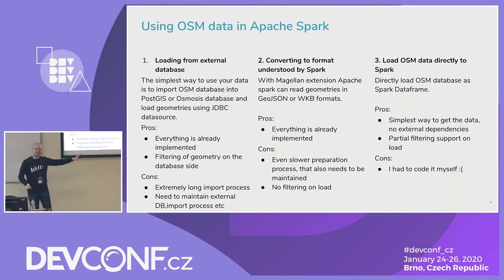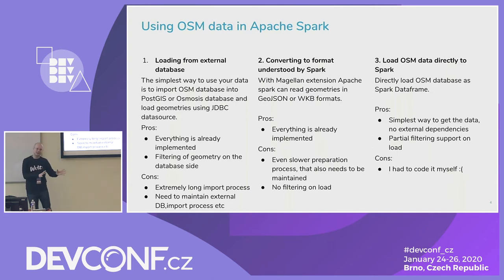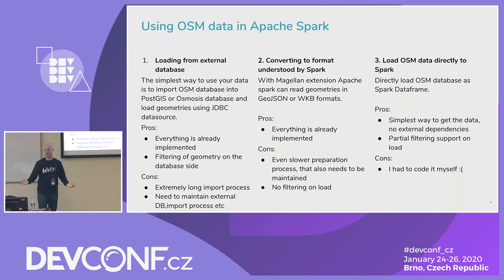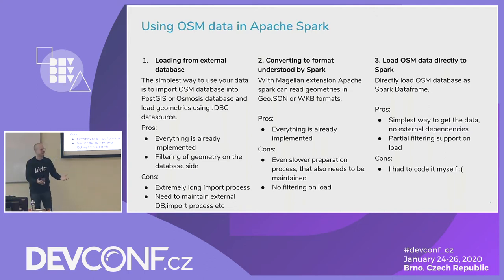The second option I tried: there are tools for Spark like Magellan or GeoSpark that can read predefined formats like well-known binary, well-known text, GeoJSON, shape files. You can convert your OSM data into one of those formats and load the directory into Spark. The good part — everything is still here, you don't need to reinvent the wheel. The problem — it's even slower, and in the worst case you have to import into Postgres and then export from it. No filtering on load because you're just reading text files.